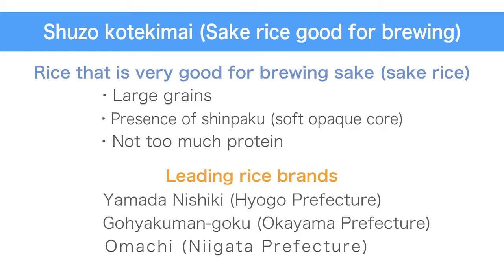Some varieties will produce a mellow flavor and others will produce a crisp flavor. Examples of the leading rice brands include Yamada Nishiki, Gohyakumangoku, and Omachi. Aside from these, there are around 100 other types of shuzo kotekimai throughout Japan.